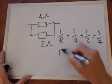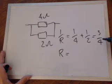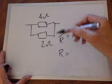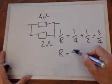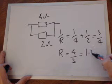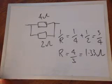So the total resistance is equal to, and to do that we just flip it, that becomes R equals four over three is equal to one point three three ohms.